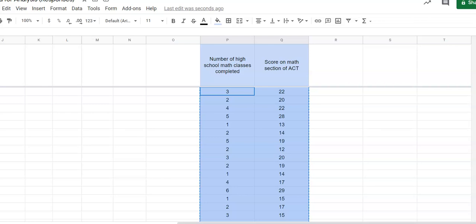Okay, so today we're going to analyze some data and I've got some fake data here just to give you an example. It says that the number of high school math classes completed is the values in the left column here, and the score on the math section of the ACT are the numbers in the right column here.